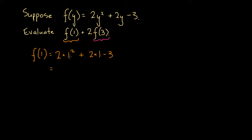Well here, 2 times 1 squared, 1 squared is 1, so 2 times 1 is 2. So we're going to have 2 plus 2 minus 3. Well 2 plus 2 is 4 minus 3 is 1. So here we've got f of 1 is equal to 1.